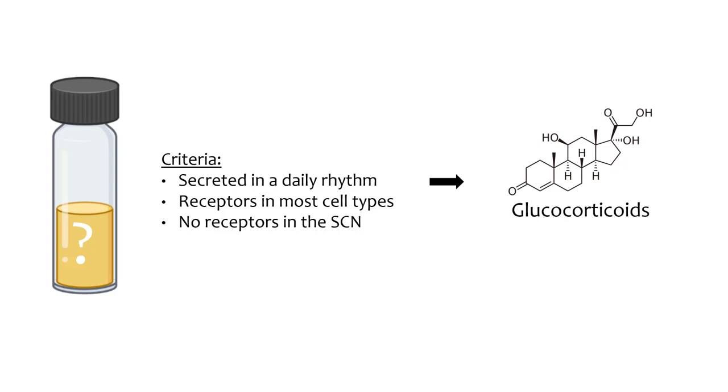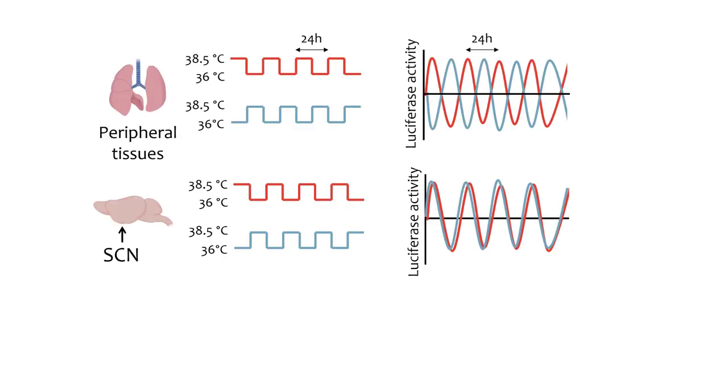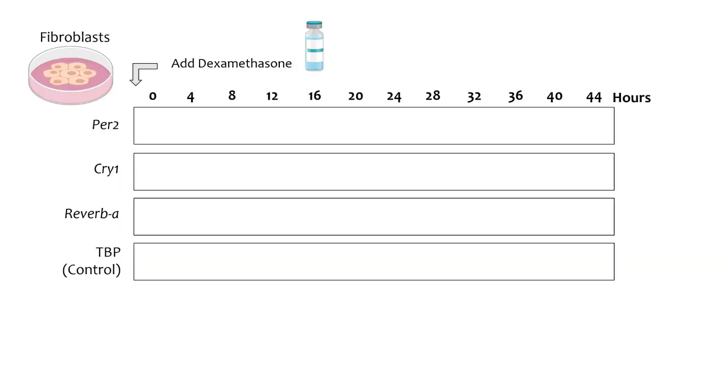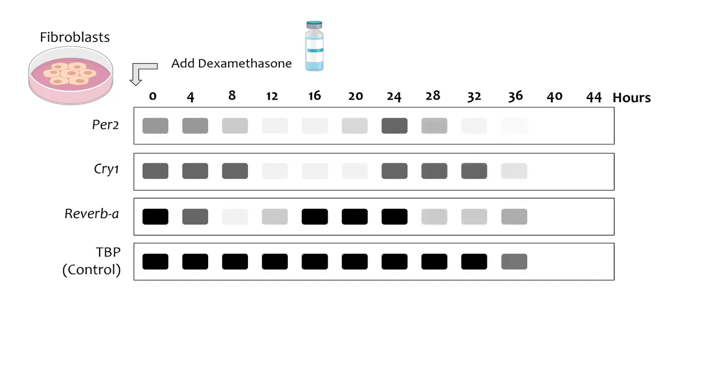Researchers decided to examine whether an artificial glucocorticoid called dexamethasone could synchronize cellular oscillators. Dexamethasone, called dex, is more stable than endogenous glucocorticoids and therefore easier to handle. In one study, the investigators treated cells with dex and measured clock gene mRNA. They found that expression of several clock genes, including PER2 and CRY1, began to show a rhythmic expression pattern after dex treatment.